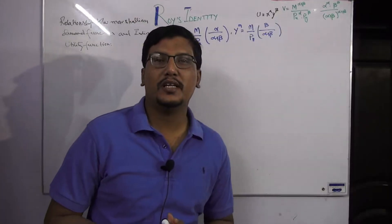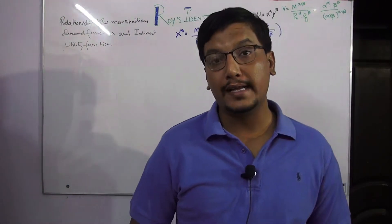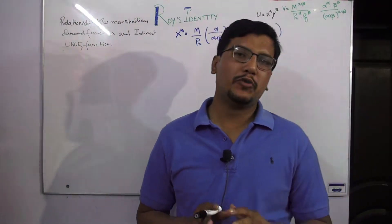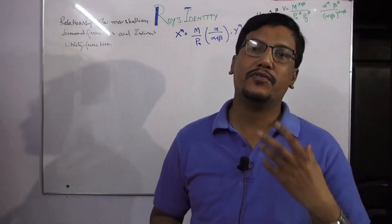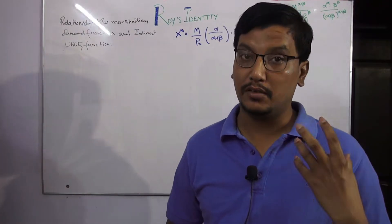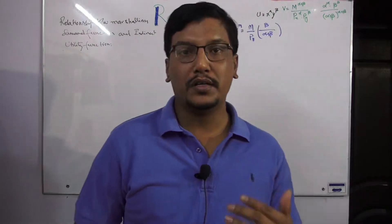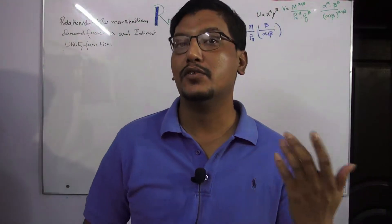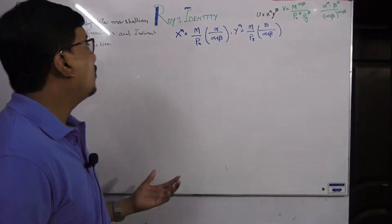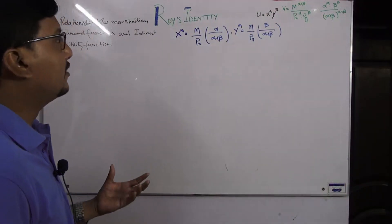Hello everyone, Assalamu Alaikum. We are going to discuss Roy's Identity. We will discuss the properties of the indirect utility function. The fifth property of the indirect utility function is Roy's Identity, and we will discuss what is basically the practical significance of Roy's Identity.